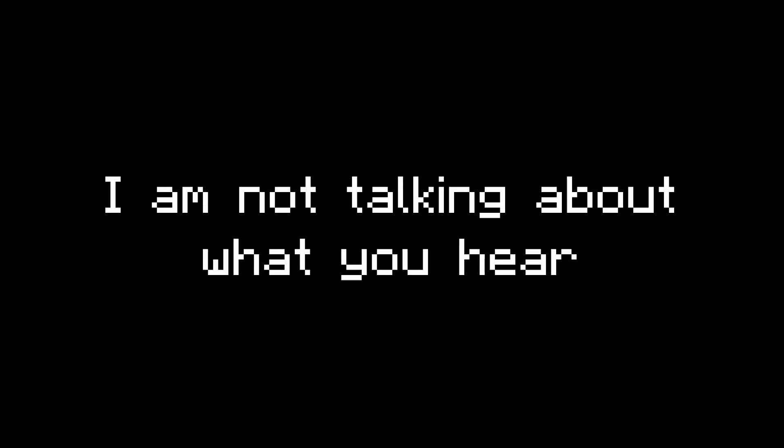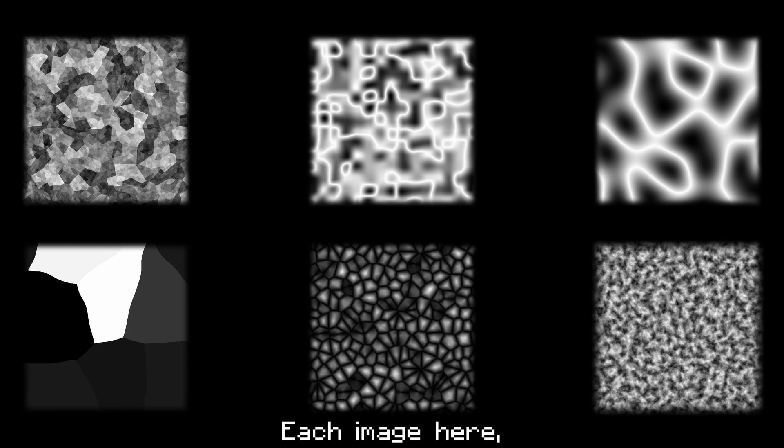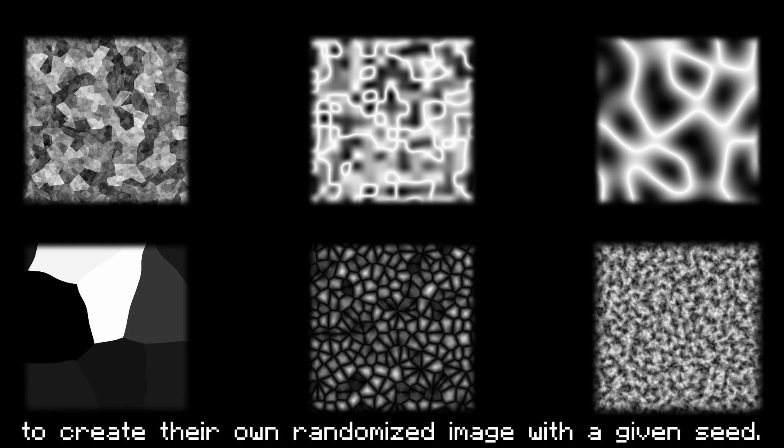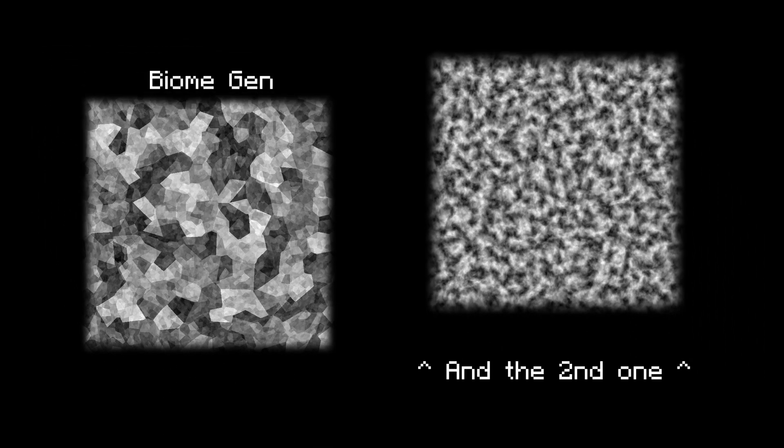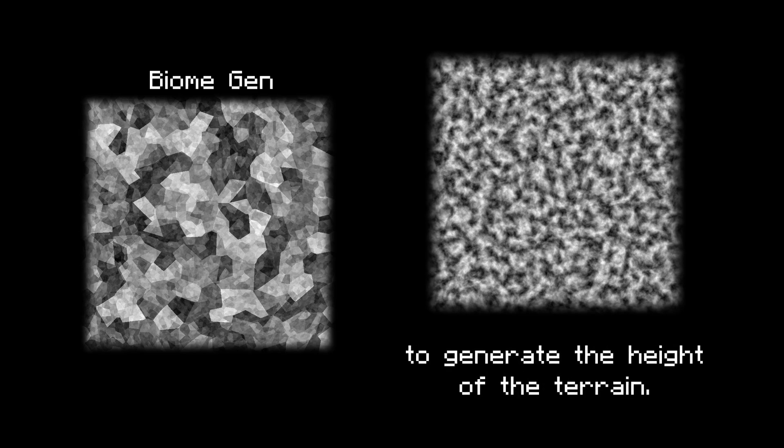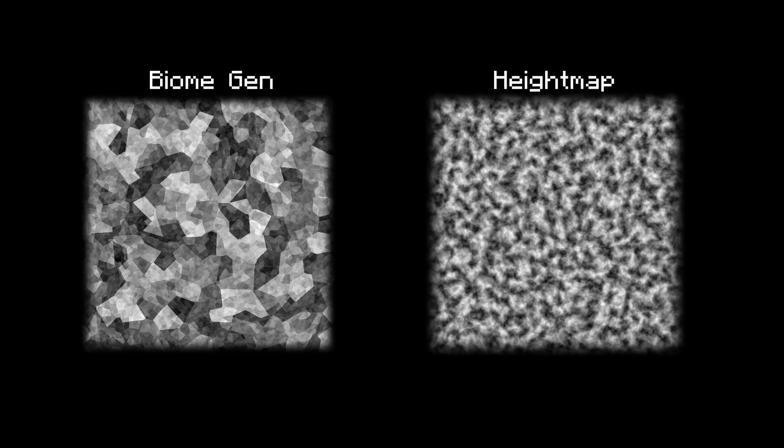In order to understand how we make the terrain, we need to understand something called noise. I am not talking about what you hear, but a collection of procedural generation algorithms that create randomized values generally from 0 to 1. Here are some examples. Each image here uses a different algorithm to create a randomized image with a given seed. Now let's focus on the main ones I will use — the first for generating biomes, and the second for generating the height of the terrain.